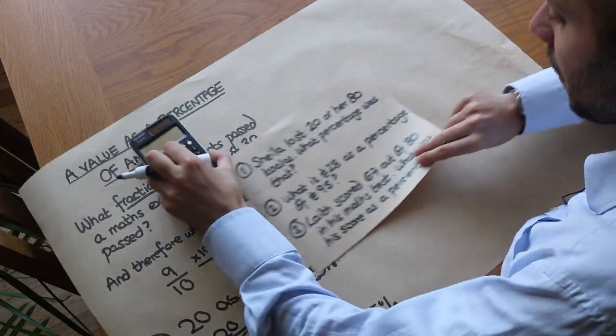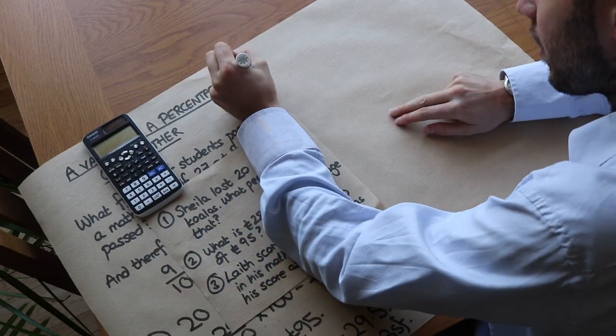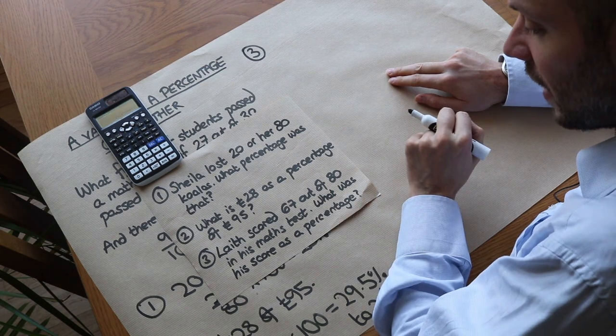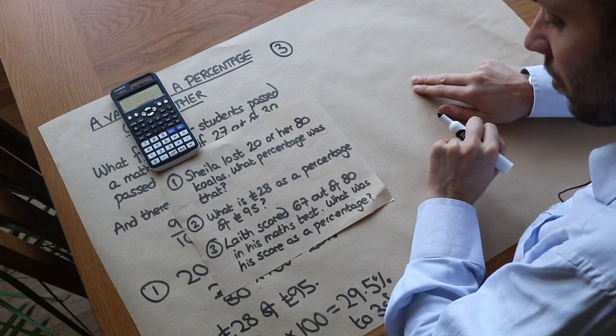And finally, this third one. Leif—that's also an Australian name—Leif scored 67 out of 80 in his maths test. What was his score as a percentage?